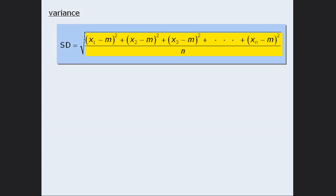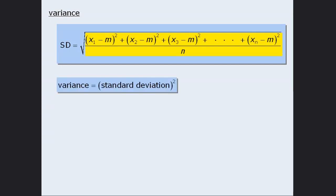Since the variance is equal to the number that we take the square root of in order to determine the standard deviation, we can say that the variance of a set of numbers is equal to the standard deviation of that set, squared. For example, if a set of numbers has a standard deviation of 3, then the variance of that set will be 3 squared, which is 9.